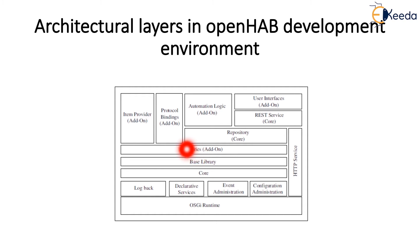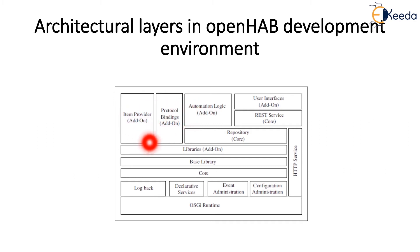The core OpenHAB objects include REST services, user interfaces, a repository and base library. OpenHAB add-on objects include item provider, protocol bindings, automation logics, event administration services and libraries.